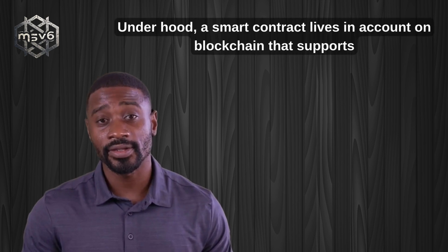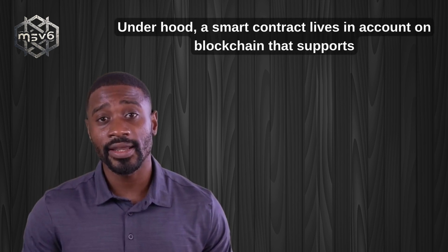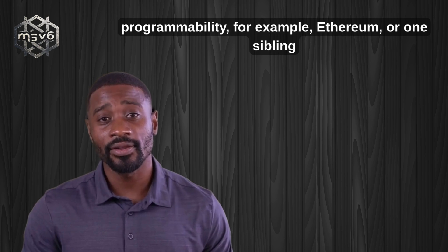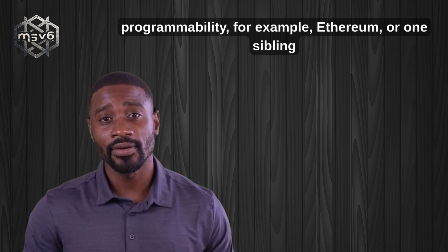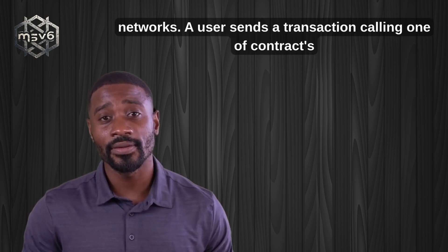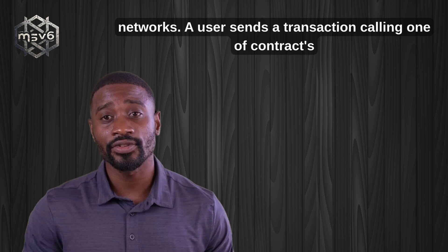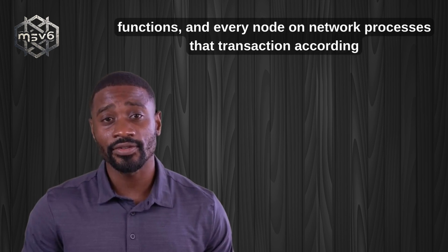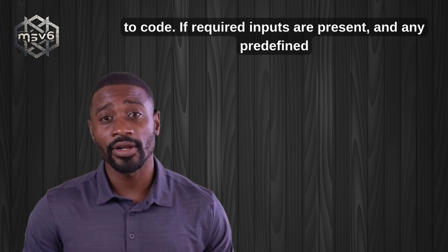Under the hood, a smart contract lives in an account on a blockchain that supports programmability — for example, Ethereum or one of its sibling networks. A user sends a transaction calling one of the contract's functions, and every node on the network processes that transaction according to the code.